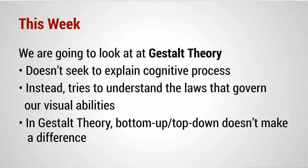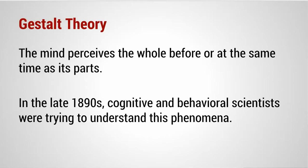This week we're going to look at Gestalt theory. This is not the same concept. Gestalt theory isn't trying to understand cognition like the last set of theories were. Instead, Gestalt theory is trying to explain the laws that govern our visual abilities. What Gestalt theory is about is trying to understand why, when we look at a scene, we tend to see it as a whole.